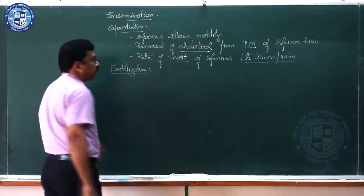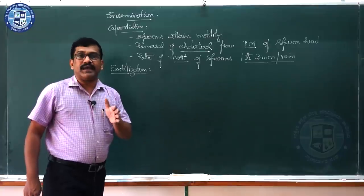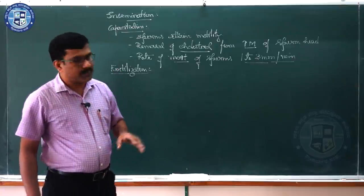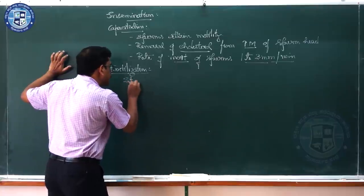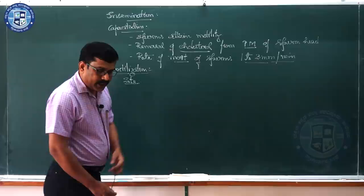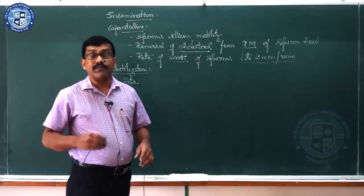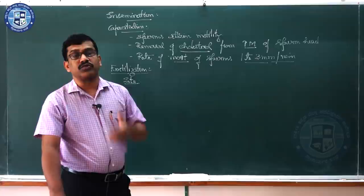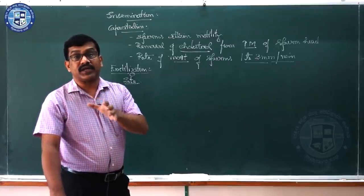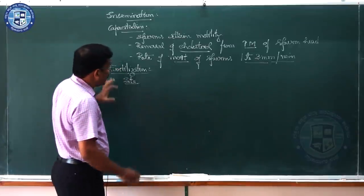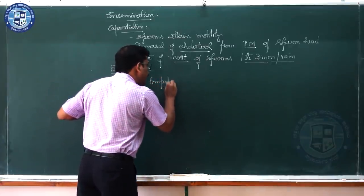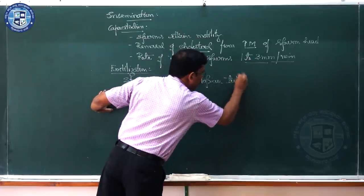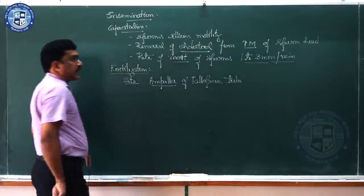Fertilization is the process of fusion of male and female gametes — the fusion of sperm and egg. The site of fertilization in humans, according to the new NCERT textbook, is the ampulla of the fallopian tube. Earlier textbooks (prior to 2018) mentioned the ampullary-isthmic junction, but the correction has been made.